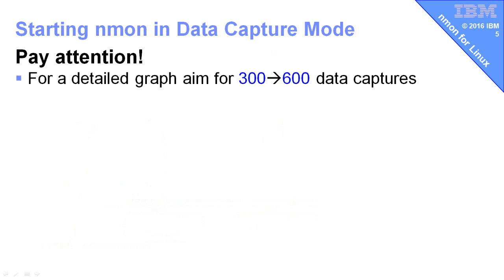What would I recommend for the number of seconds and the count? A detailed graph looks good on a screen — you need 300 to 600 data captures. I get some NMon users that create thousands and thousands of data points, and then they try and put this onto a screen that only has 1,000 pixels across. Trying to map 18,000 points onto 1,000 pixels doesn't work. You can't have eight data points per pixel on your screen. So keeping it down to this sort of number produces a nice detailed graph without any extra wasted data, file space, and processing time.